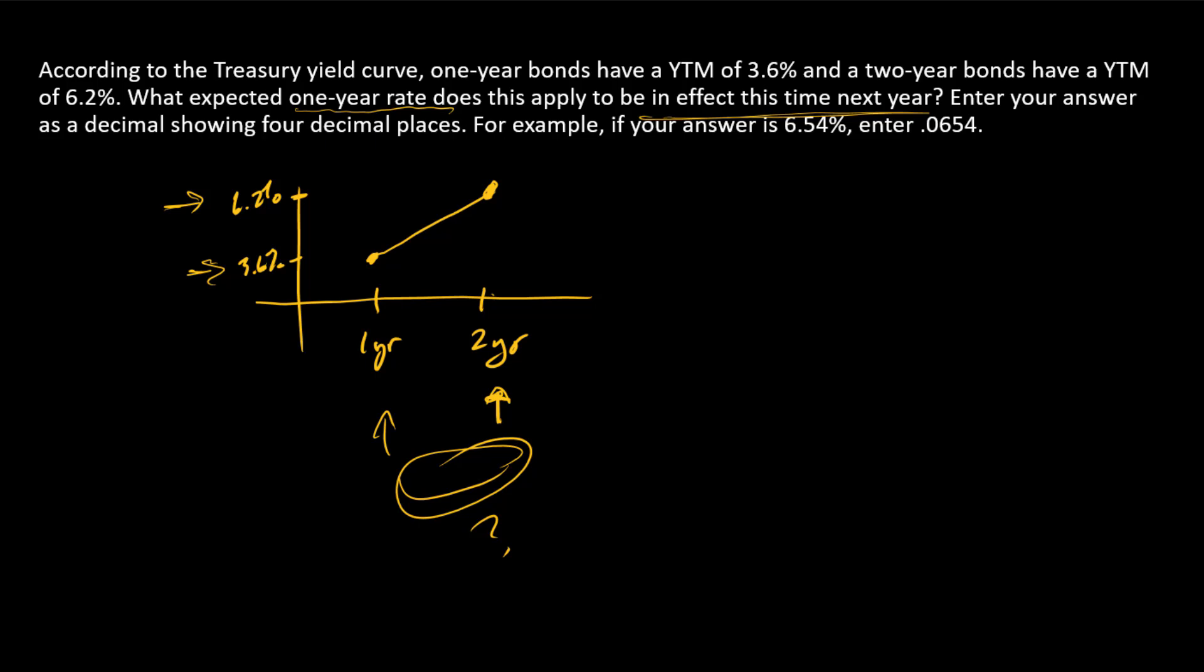The idea behind expectations theory is these numbers together convey what those expectations are. Let's think about a two-period investment. One way this investment could be made is investing at 6.2% over two years. If that's how this investor invests, then after two years, each dollar grows to (1.062)^2, that's 6.2% for each of two years compounded over two years.